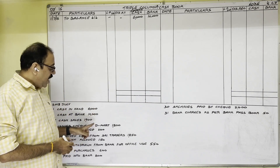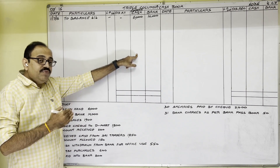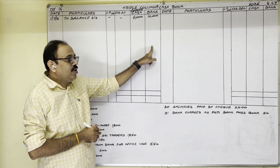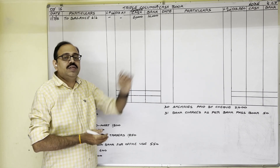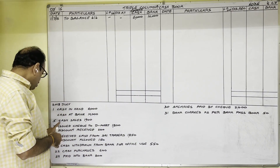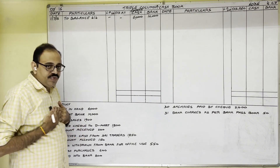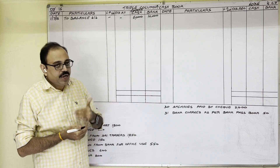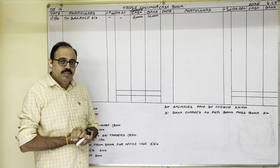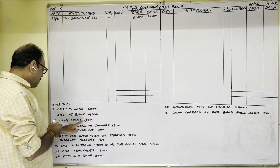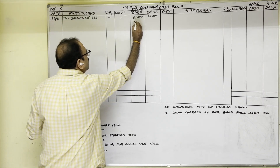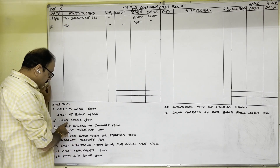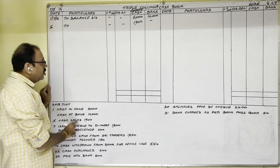For transactions: if cash is coming into the firm — debit side cash column; if cash is going from the firm — credit side cash column. Cash sales on the 5th date: 1,900 rupees. We sold goods to a customer for cash, so the customer paid money to us — cash is coming in, debit side cash column, 1,900 rupees on 5th date. In the particulars column we write sales account.